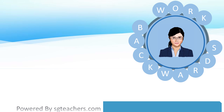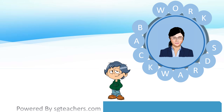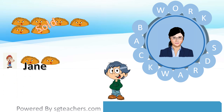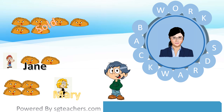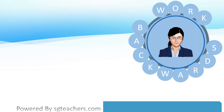So what information have we been given, and what information do we not know? Mary sold six curry puffs, gave two to Jane, and finally had four left over. But we do not know how many curry puffs Mary made in the beginning. We need to find out how many curry puffs she made. We can use a working backwards strategy to find the answer.